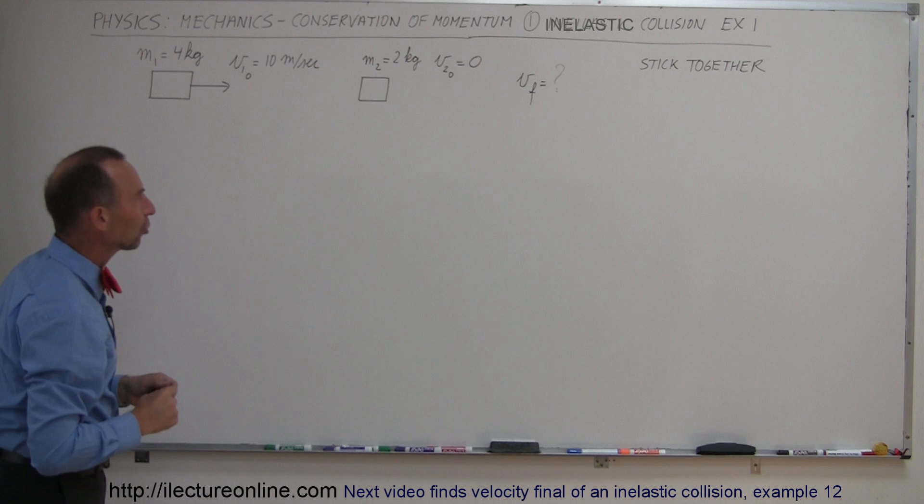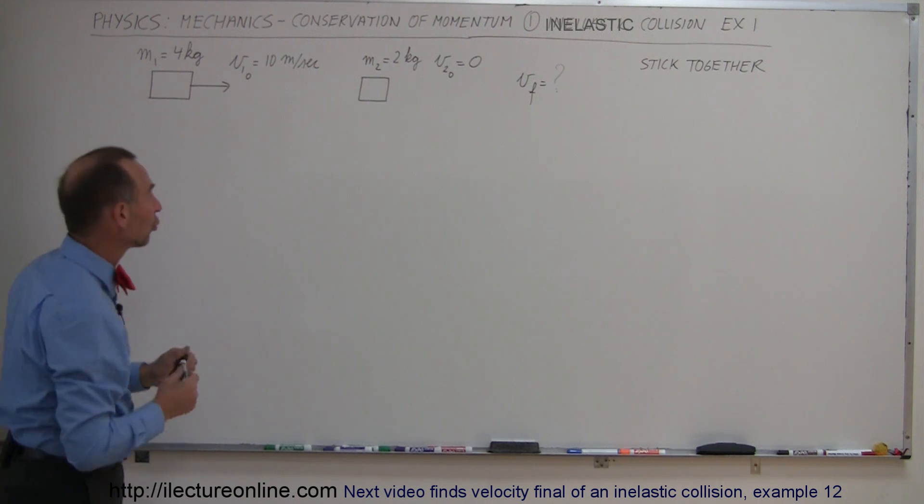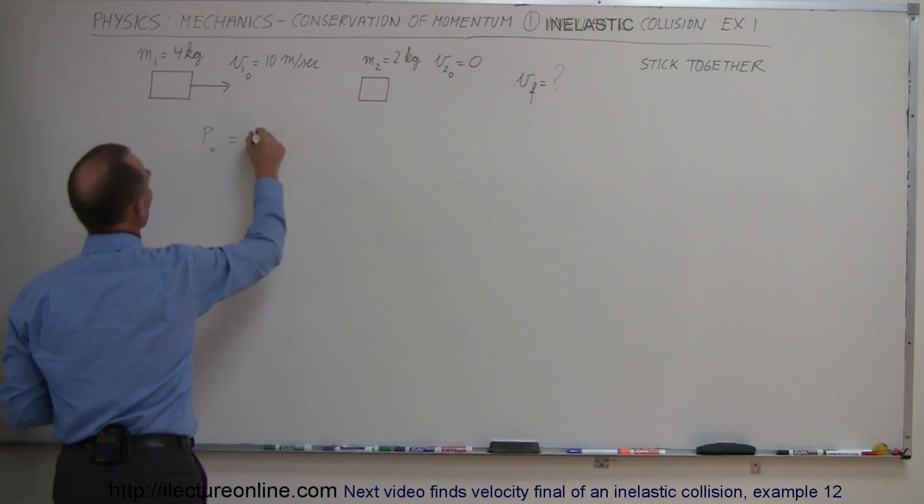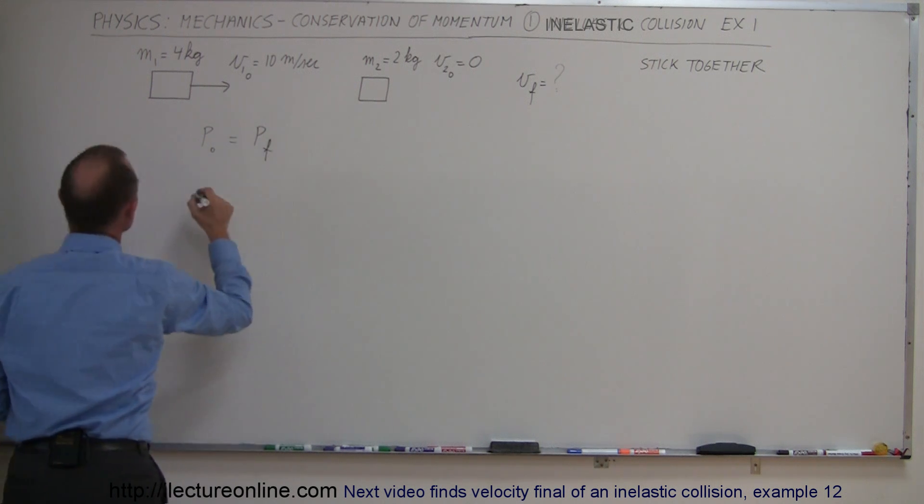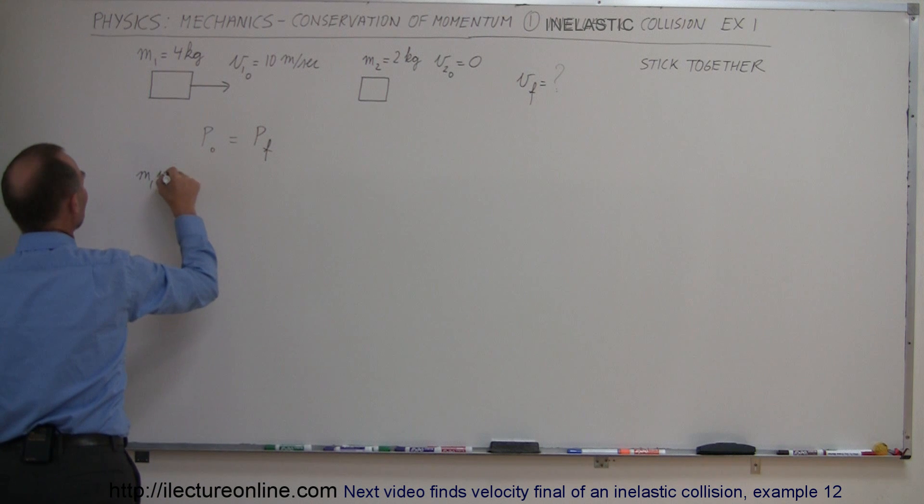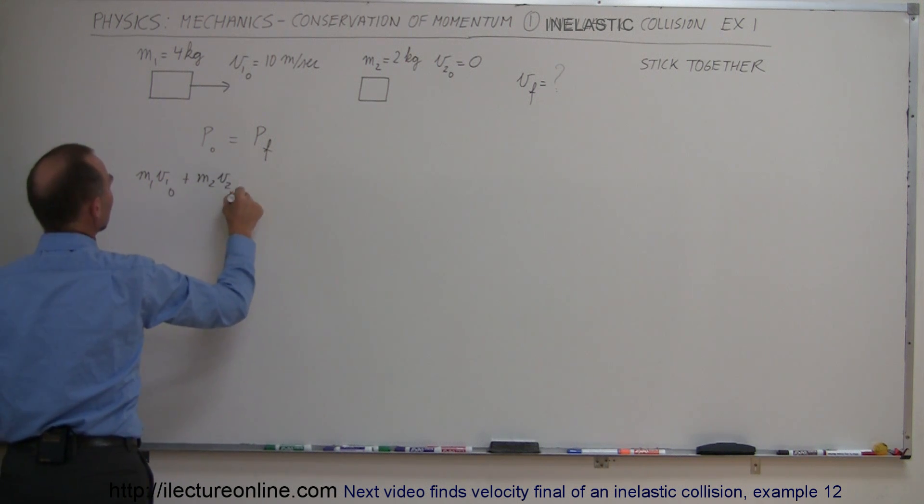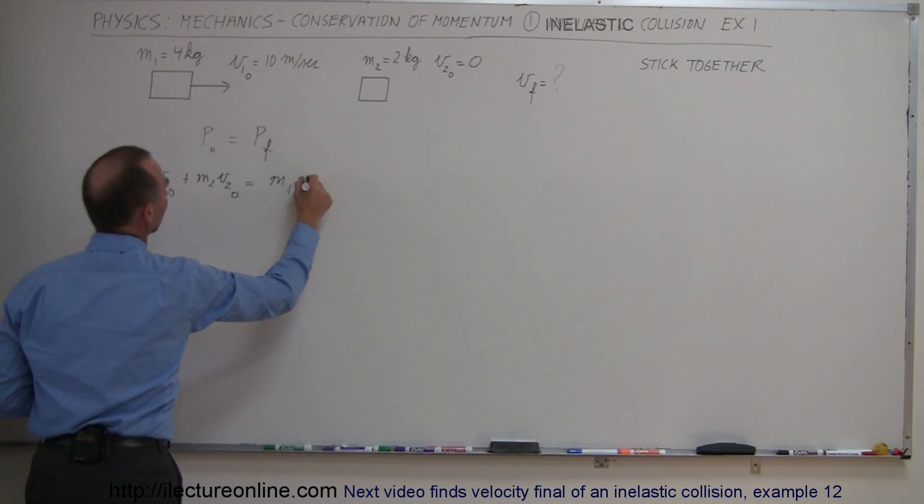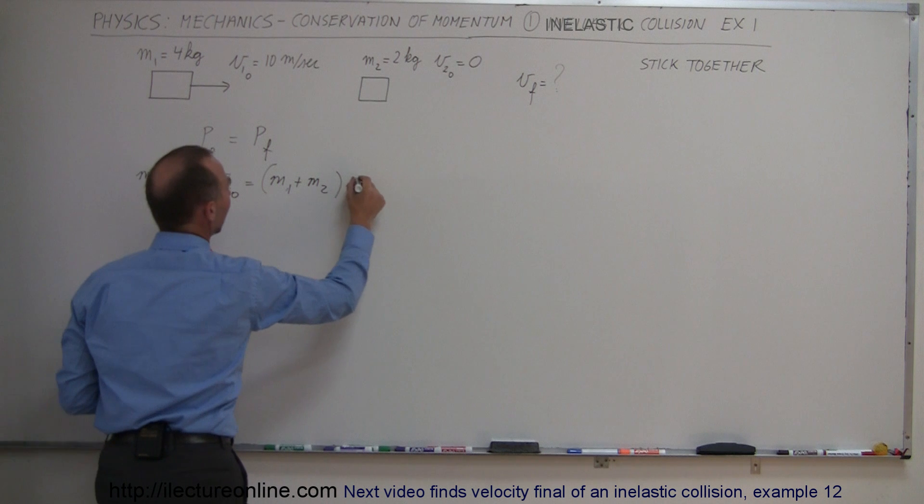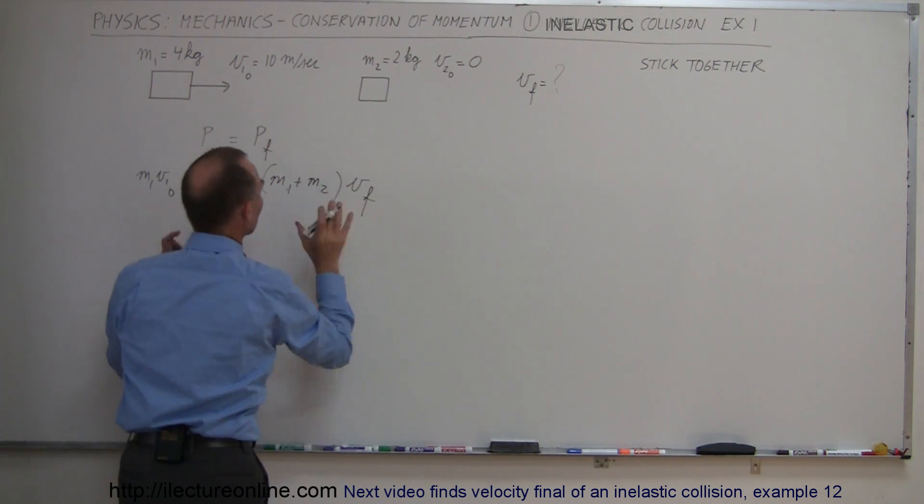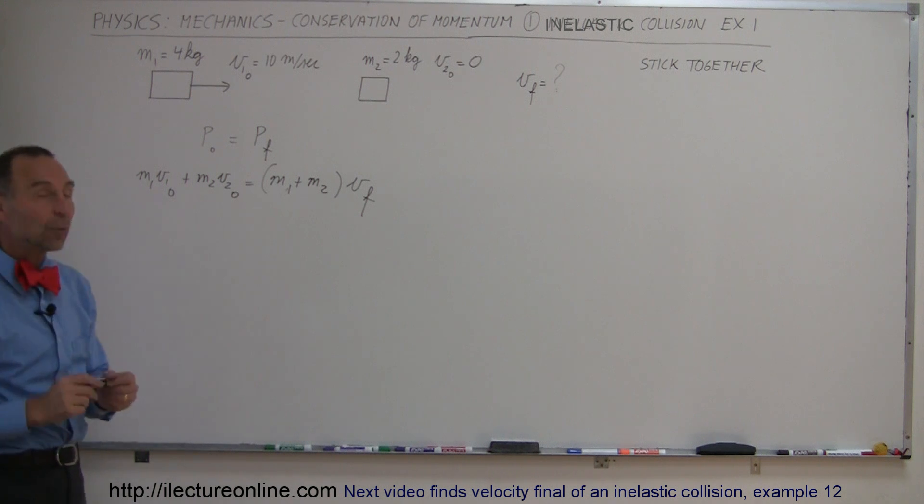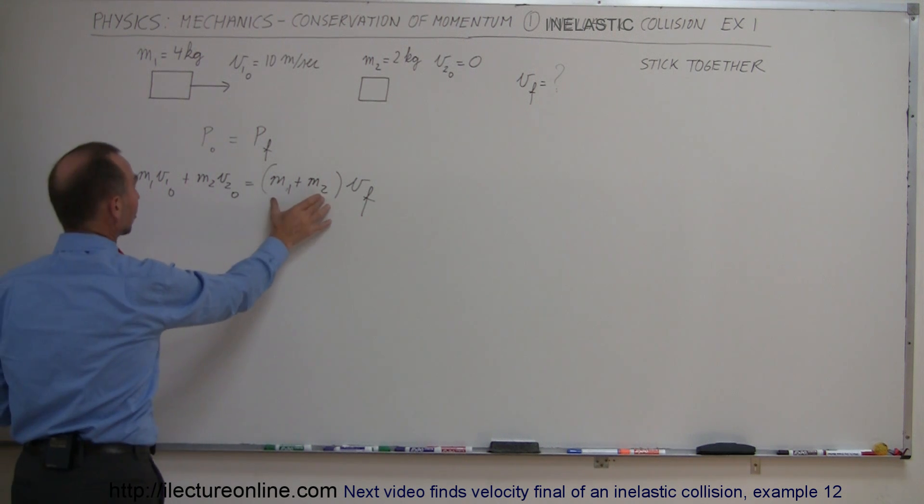It's also inelastic, that means that energy is not conserved. So we say that the momentum before the collision equals the momentum after collision, which means that m1 times v1 initial plus m2 times v2 initial equals m1 plus m2, because they stick together, times v final. So that would be the general equation of a collision between two objects that is non-elastic and where they both stick together after the collision.